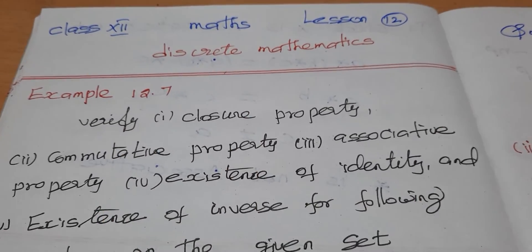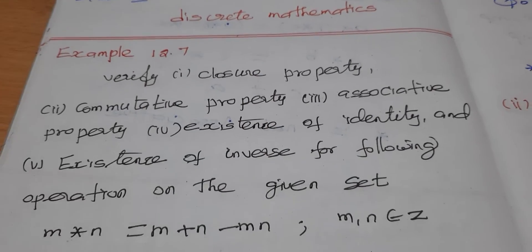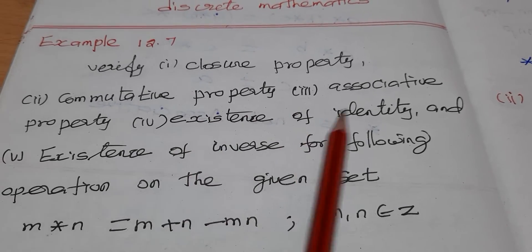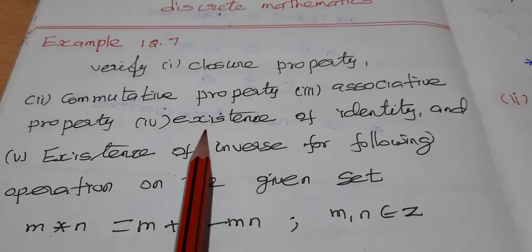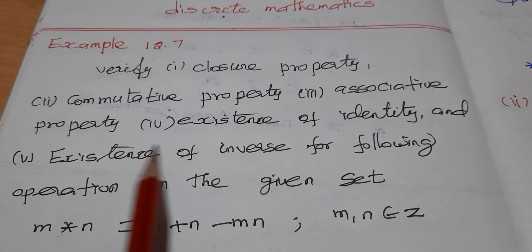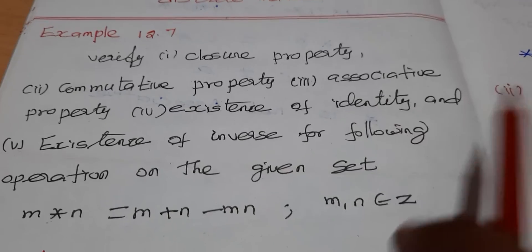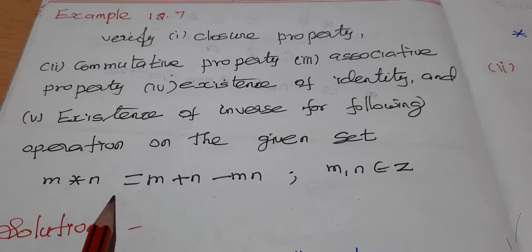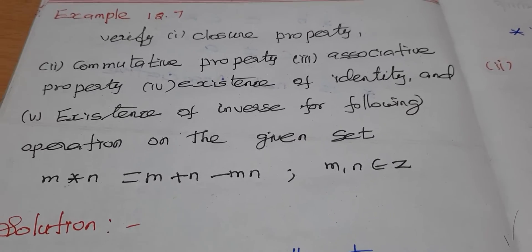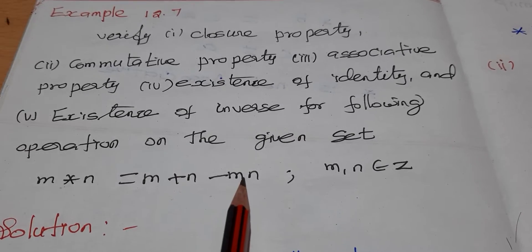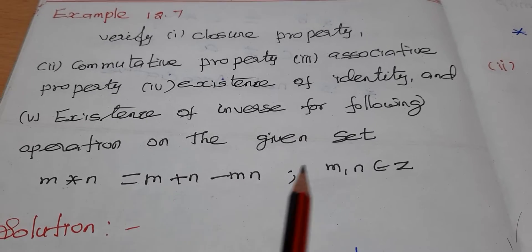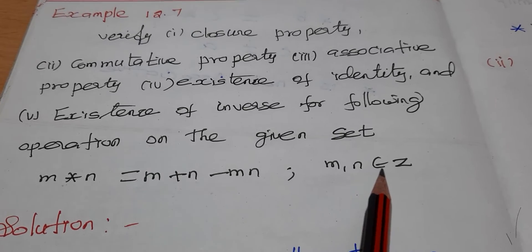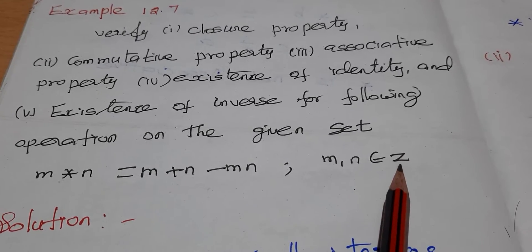Verify the closure property, commutative property, associative property, existence of identity and inverse of the following operations of the given set. m star n is equal to m plus n minus mn, where m, n belongs to Z. Z is the set of integers.